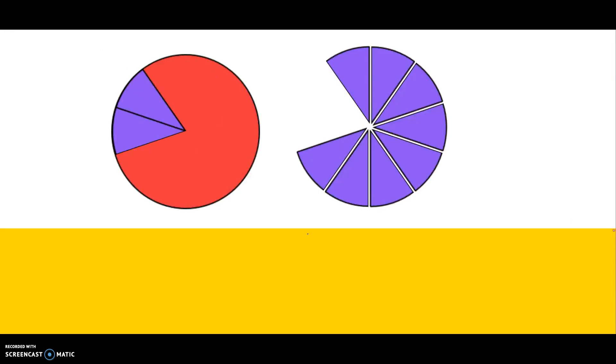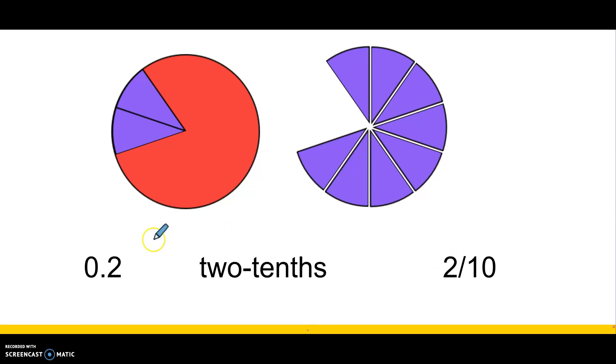What am I showing here? I have two of my purple pieces covering my one whole. I'm talking about two-tenths. Here it is as a decimal. Here it is in words. Here it is as a fraction. Two-tenths. Two-tenths. Two-tenths. Three different ways we're saying the same thing. Two-tenths of my whole is covered.